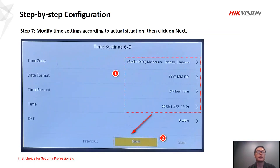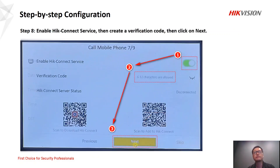In step seven, configure the time zone, time, and time format as desired, then click next. In step eight, enable Hi-Connect and type in a verification code, then click next.